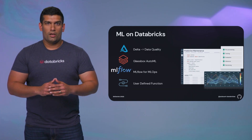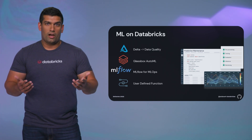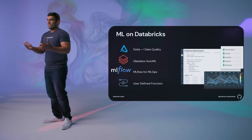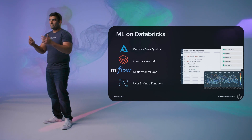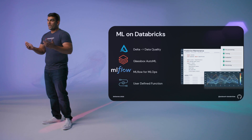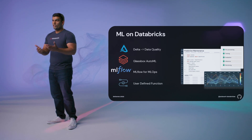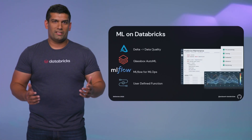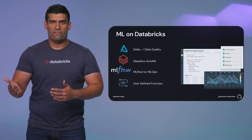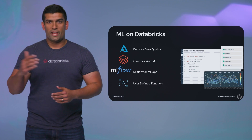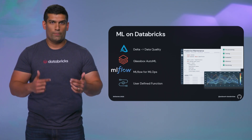On Databricks you have a feature store that leverages Delta under the hood to ensure discoverability and reuse of features. The Lakehouse caters to both professional data scientists and citizen data scientists, and AutoML plays a key role here. MLflow — an open source MLOps framework that we created — is tightly integrated with the platform so that every machine learning experiment parameter, metric, and model is tracked and logged, making the entire process reproducible and easy to put models into production. Logging a model with MLflow automatically creates a user-defined function, or UDF, which encapsulates the inference logic whether you want to deploy the model as a service, in-stream, or for batch inference, significantly reducing developer overhead.